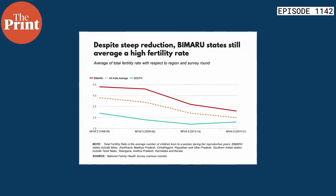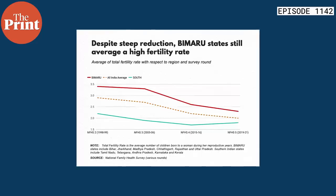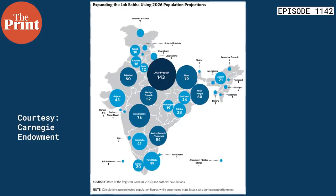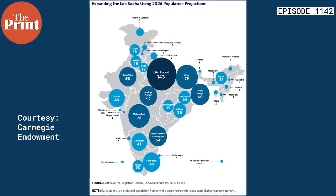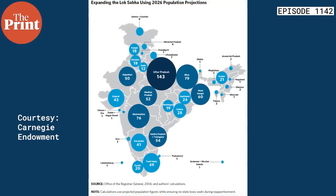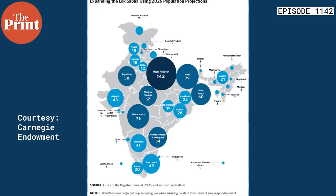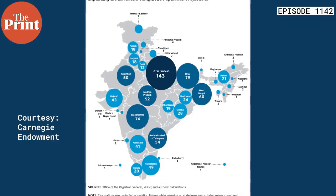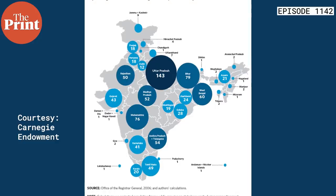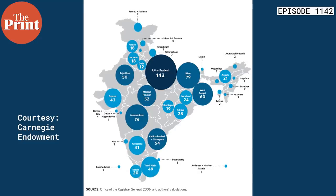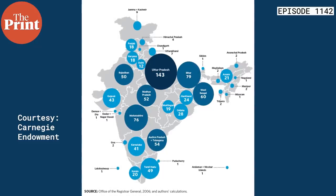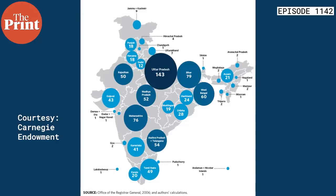Looking at the Vaishnav-Hinton paper chart for a 2026 reconstituted parliament: UP goes from 80 to 143 seats, Bihar from 40 to 79, Madhya Pradesh from 29 to 52, Rajasthan from 25 to 50 — essentially doubling. Among new states: Jharkhand goes from 14 to 24, Chhattisgarh from 11 to 19. Adding UP, Bihar, MP, Rajasthan, Chhattisgarh and Jharkhand together — the Bimaru states — they currently hold 199 seats in a 543-member house, which is 36.64%. In a new 848-seat parliament projected for 2026, that share rises to 43.35%, a net increase of about 7%.